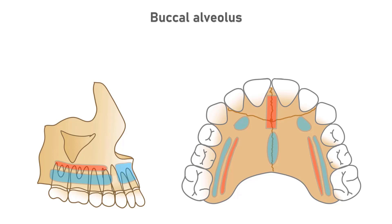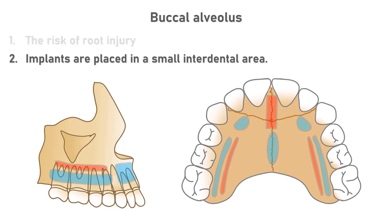Two major problems are associated with the use of buccal alveolar implants: the risk of root injury and implants placed in a small interdental area. Even with proper treatment protocols, including off-center and oblique insertion at the area between the second premolar and the first molar, 3 mm of mesiodistal tooth movement is not feasible.